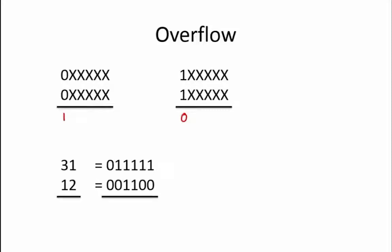Suppose we try adding 31 plus 12 using 6-bit two's complement. This results in 101011, which has its most significant bit equal to 1, even though we were adding two positive numbers.